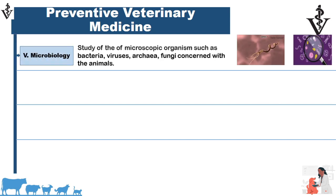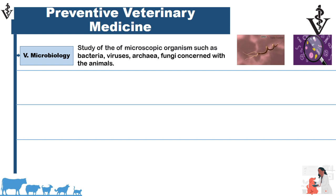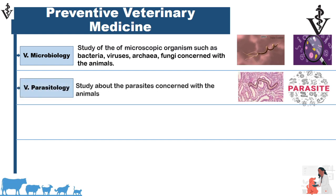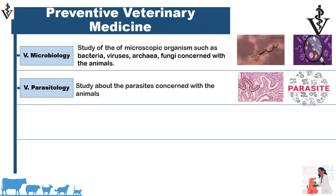Veterinary microbiology is a science in which we study microscopic organisms that cause different diseases in animals. These microscopic organisms include bacteria, viruses, fungi, and others. The second subject is veterinary parasitology, which is the study of parasites that cause different diseases in animals.